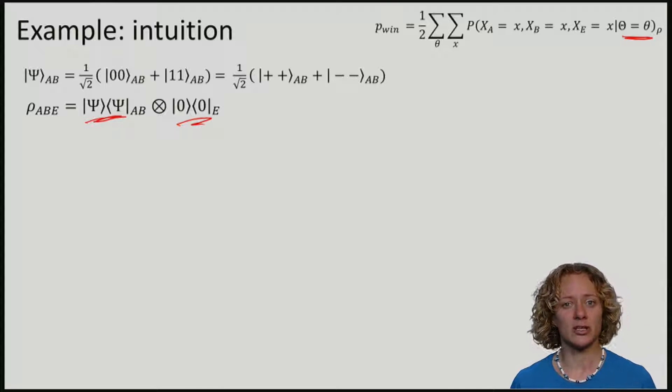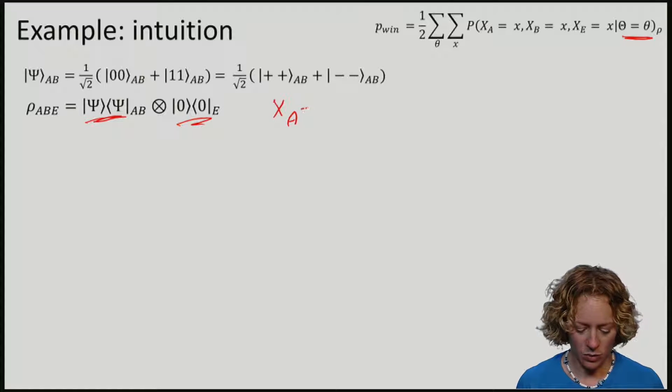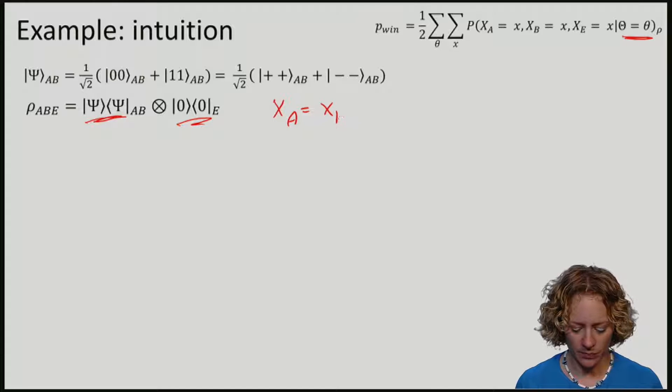Note that this means that if they share a maximally entangled state, certainly the outcome xa will always be equal to the outcome xb.